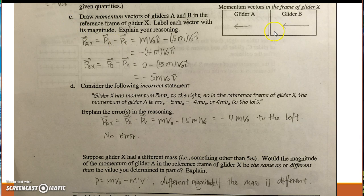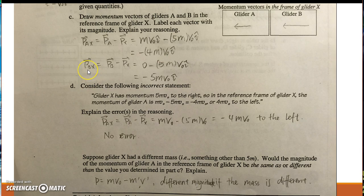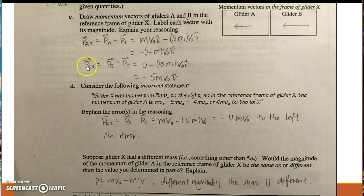Next question, part C: the momentum vectors for glider A and glider B both go to the left. The momentum for glider A equals negative 4M times velocity, and the momentum for glider B equals negative 5 mass times velocity. I made a mistake in speaking — this is the momentum of glider A and glider X, and this is the momentum of glider B and glider X.